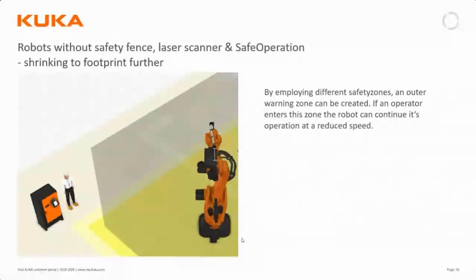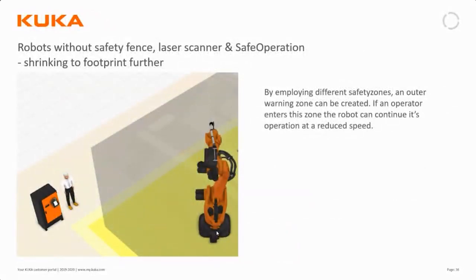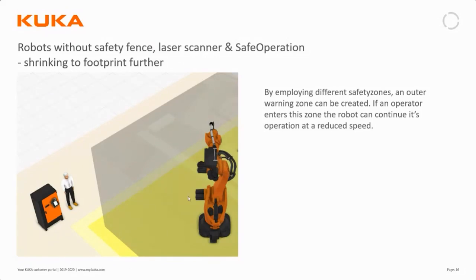There is actually one more feature we could employ using the technology and Safe Operation: we could create two areas within the safety zone — one outer and one inner area. This means we have an outer warning zone, so if an operator enters the light yellow field the robot will react by continuing its operation but at a lower speed. And in reality, what we are creating is that if the operator then enters the stop zone — the dark yellow field — the stop time of the robot will be shorter because the speed is already lower. Therefore, by differentiating the zone, we actually make the working area for the operator a bit more flexible than it was before.